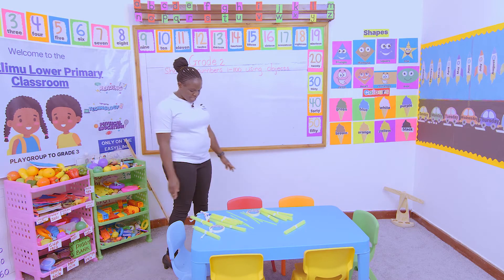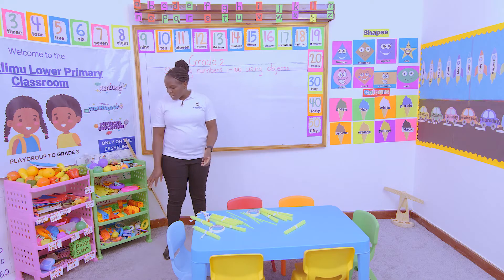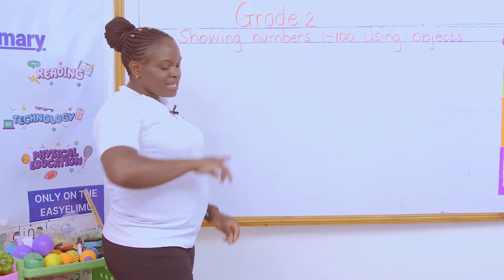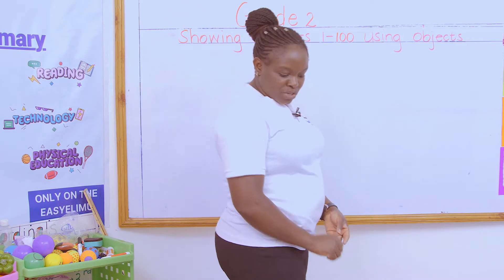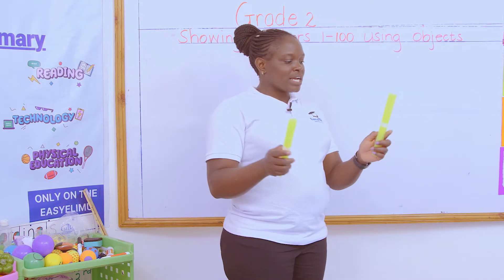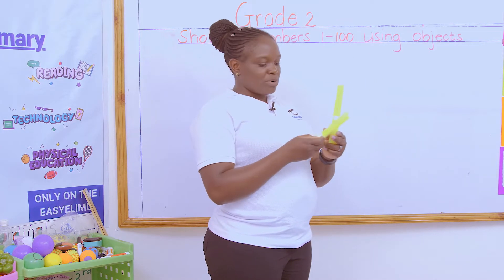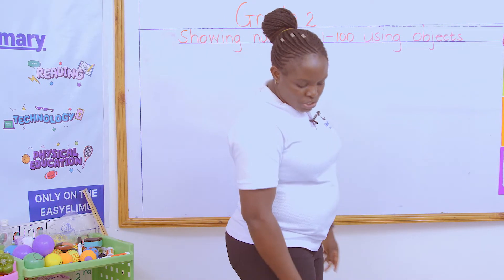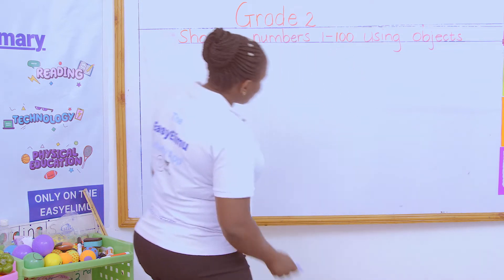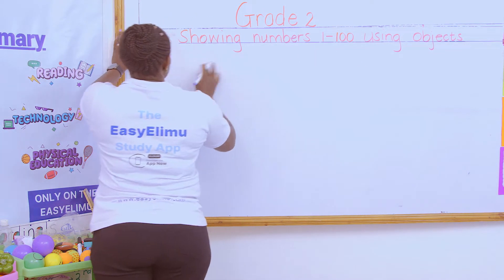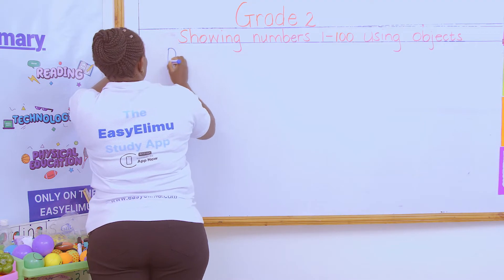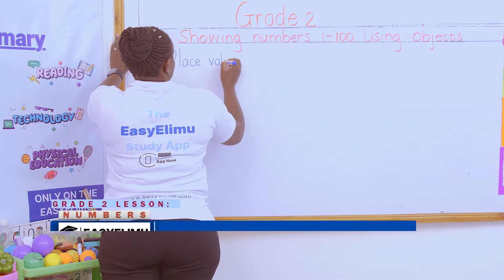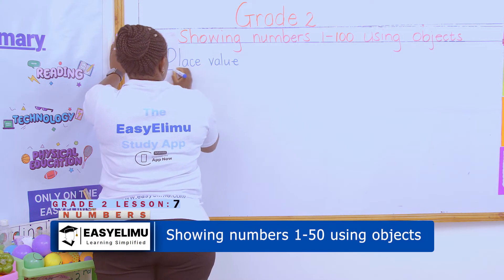You can use any other objects — you can use the blocks, you can count the toys, you can count the bottle tops. But the easiest thing is using the straws, because these ones don't take a lot of space. You only put them together like this, and imagine these are 10. Now, rule number one: first know the place value. Place value is the position of a number.